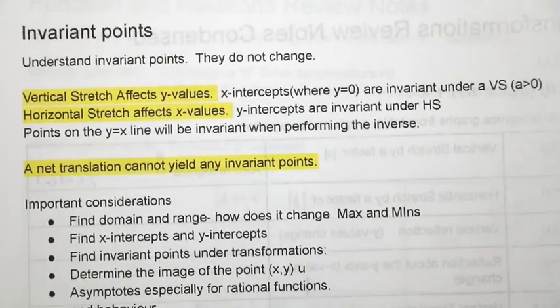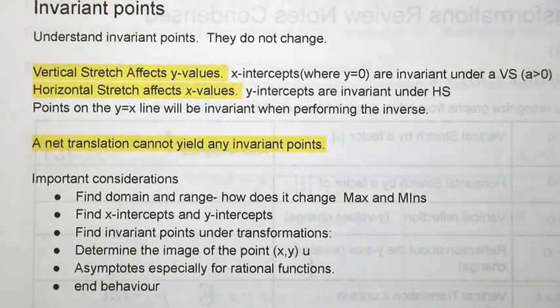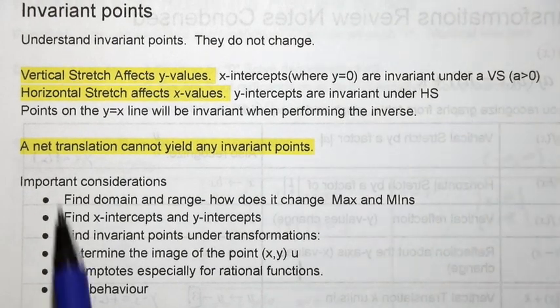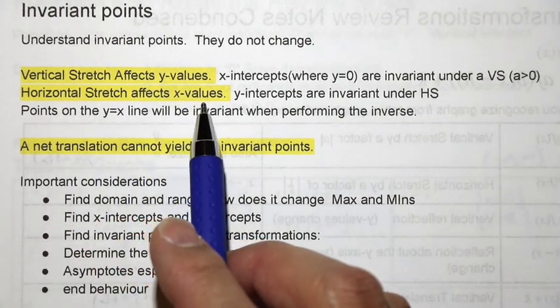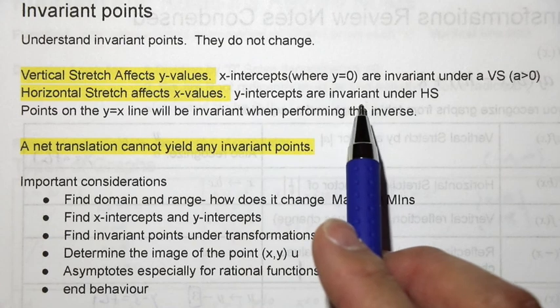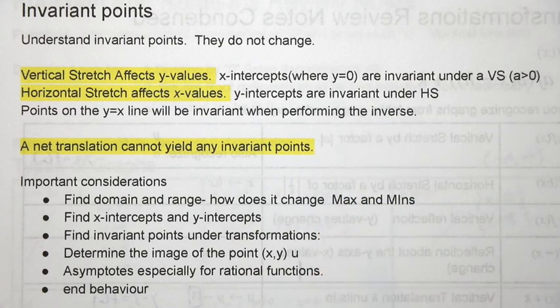It's important to know when you have invariant points. So they do not change. A vertical stretch affects y values. So if you have x-intercepts where the y is equal to 0, those are invariant under a vertical stretch. A horizontal stretch will affect the x values. Now y-intercepts are where the x value is equal to 0. So those are invariant under a horizontal stretch.